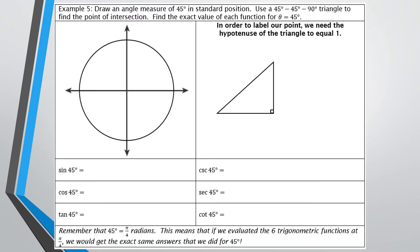We're going to draw a 45-degree angle in standard position and turn it into a triangle like we've been doing. Because we are in the unit circle, our hypotenuse will always equal 1. We're going to take our special right triangles and manipulate them so they fit in the unit circle. For a 45-45-90 triangle, I'll put in the angles, and the two legs are labeled x with hypotenuse x√2.